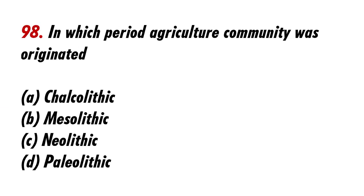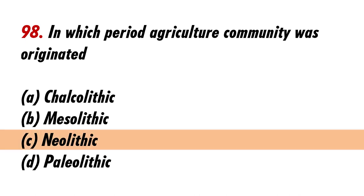In which period did agricultural communities originate? Answer C: Neolithic.